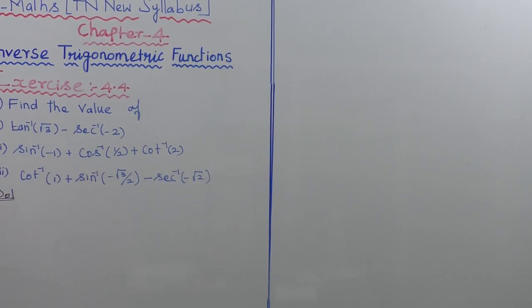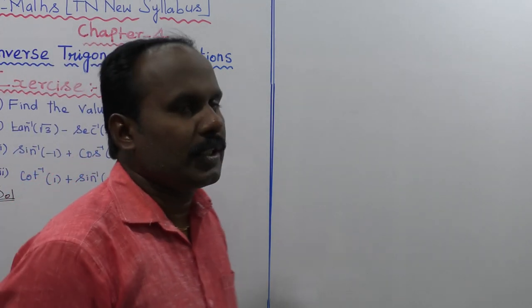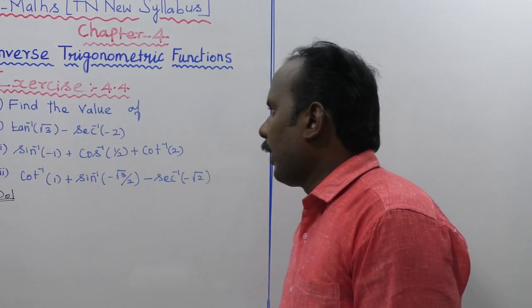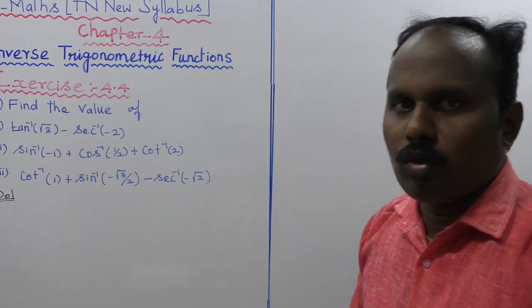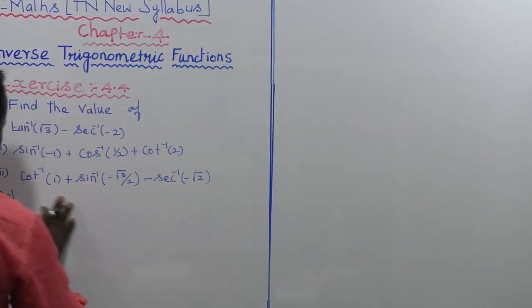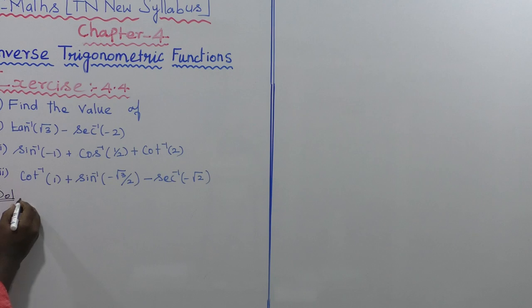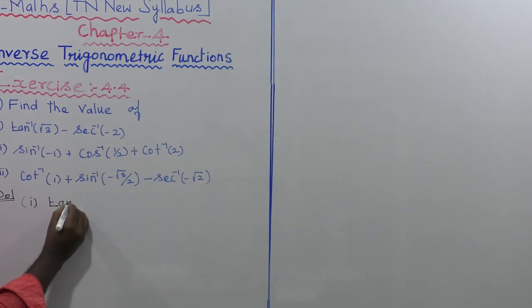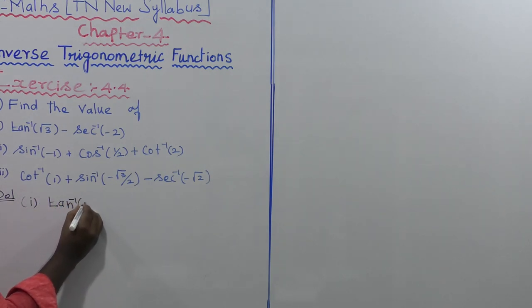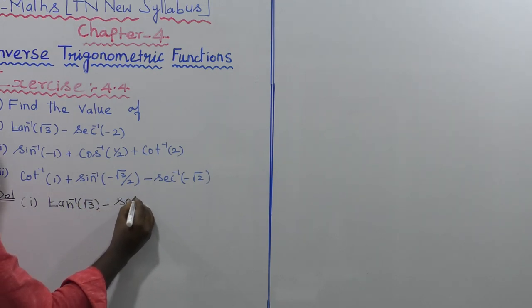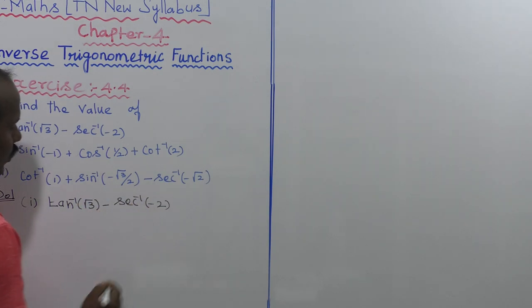This is question 4.4, second sum. We need to find the value of the first subdivision: tan inverse of root 3, minus secant inverse of minus 2.